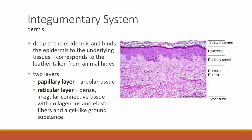Now let's talk about the dermis. It's deep to the epidermis and binds it to underlying tissues. The dermal tissues are the leather taken from animal hides — super strong but very flexible — and are largely composed of a dense, irregular connective tissue built of collagenous and elastic fibers in a gel-like ground substance.